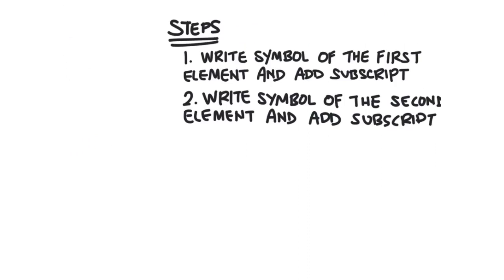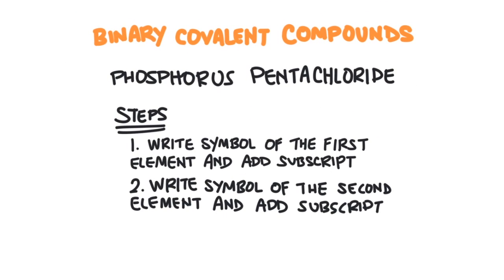To go from a name to a formula, first write the symbol of the first element and add a subscript according to the prefix, then write the symbol of the second element and add a subscript according to its prefix. For example, phosphorus pentachloride would be PCl5.